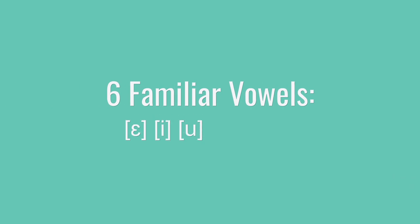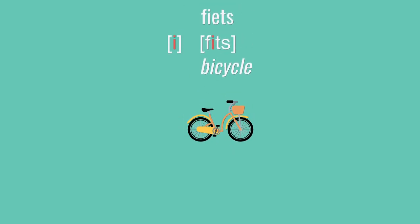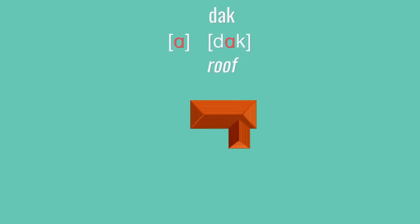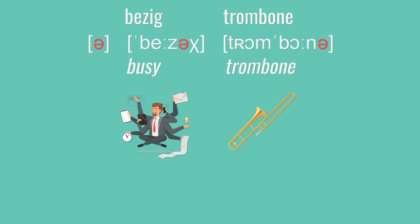And with that, we've covered all of the Dutch vowels. So let's review. We began with six familiar vowels that are basically the same in Dutch and in English. The big thing to remember for U is to make sure you're only saying one vowel instead of a mix of vowels like OO. Then there was A as in duck, then I as in this, and last the schwa — the last vowel in bezig and trombone. This was similar to the English A as in about, just a bit more in the direction of I: trombone.